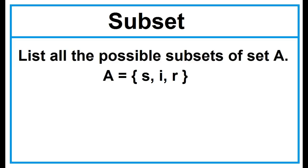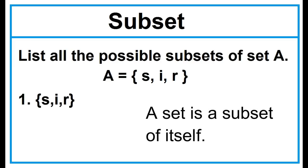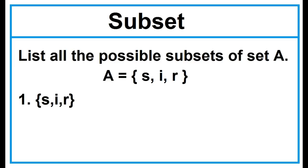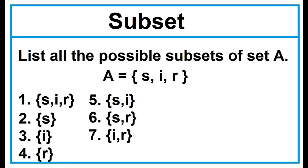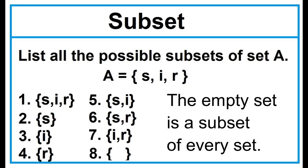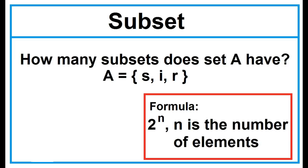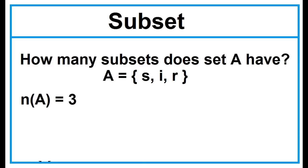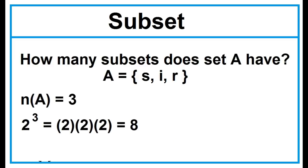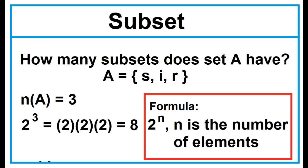Example: List all the possible subsets of Set A. Number 1 is a set with 3 elements. Numbers 2, 3, 4 are sets with 1 element. Numbers 5, 6, 7 are sets with 2 elements. And number 8 is an empty set. To find the number of subsets, use the formula 2 to the power of N, where N is the number of elements. The cardinality of Set A is 3, so 2 to the power of 3 equals 2 × 2 × 2 = 8.